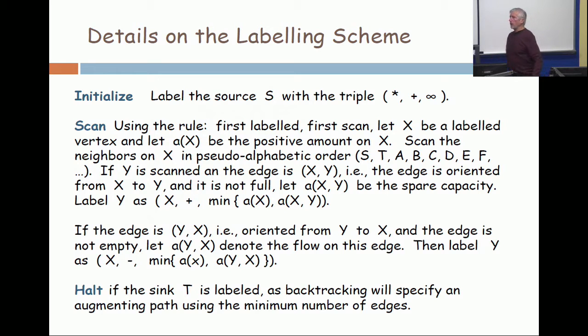Now we're going to scan using the basic rule for breadth-first search. The first time we label, in the order that we label the vertices, we will scan from them. Our first scan takes place from the source. When we scan from a vertex, we're going to look at all of its neighbors.